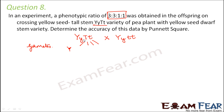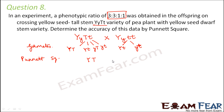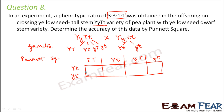The possible gametes from YyTt are: YT, Yt, yT, and yt. The possible gametes from Yytt are: Yt and yt — these are the two unique gametes. Now we design the Punnett square, writing the gametes from YyTt on the top row and those from Yytt on the left column. Crossing these gives combinations: YtYT (=YYTt), YtYt (=YYtt), YtyT (=YyTt), and Ytyt (=Yytt).